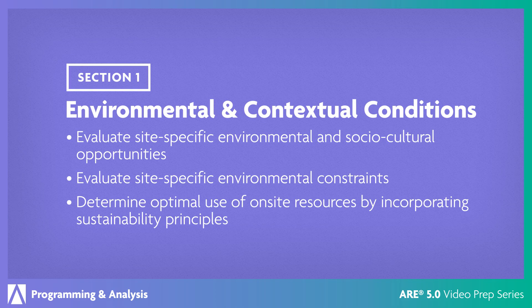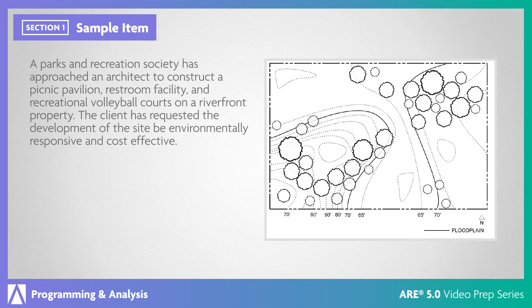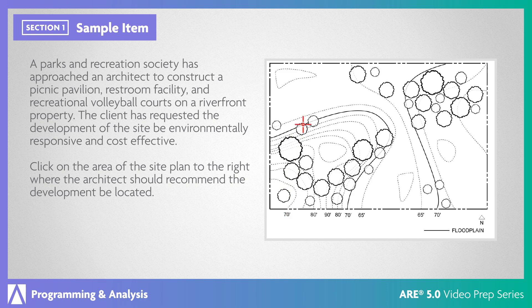In the environmental and contextual conditions section, you'll evaluate a project site and identify both the opportunities and constraints that may impact future development. A Parks and Recreation Society has approached an architect to construct a picnic pavilion, restroom facility, and recreational volleyball courts on a riverfront property. The client has requested the development of the site be environmentally responsive and cost effective. Click on the area of the site plan where the architect should recommend the development be located. The architect should recommend the southeastern region. The Site Planning and Design Handbook discusses site analysis, sustainability, and development principles that can be directly applied to the evaluation of this riverfront property.